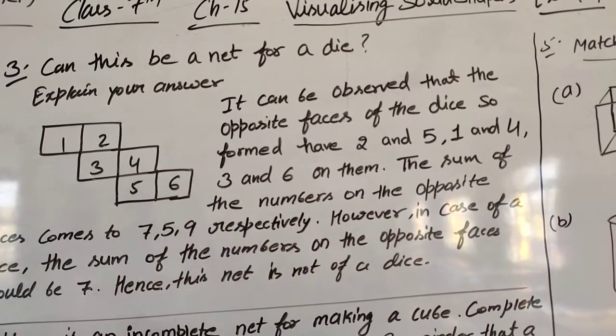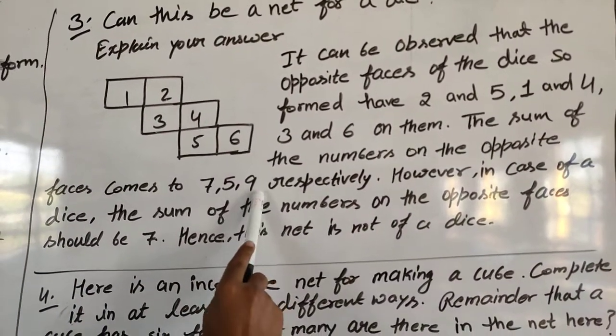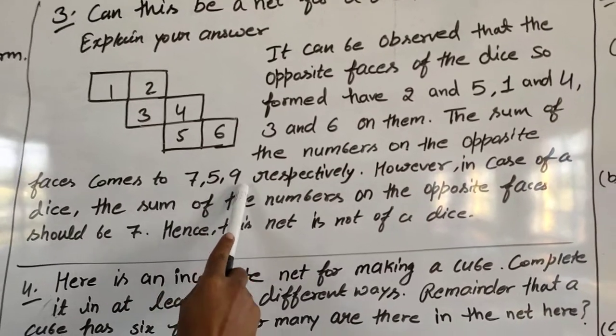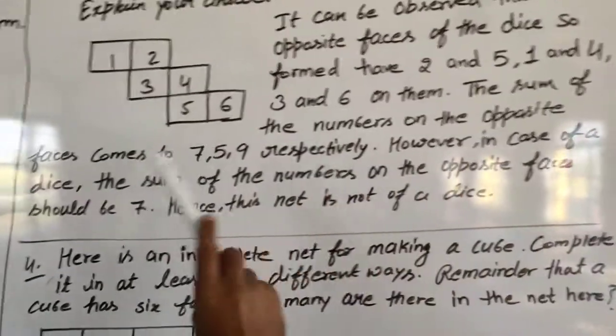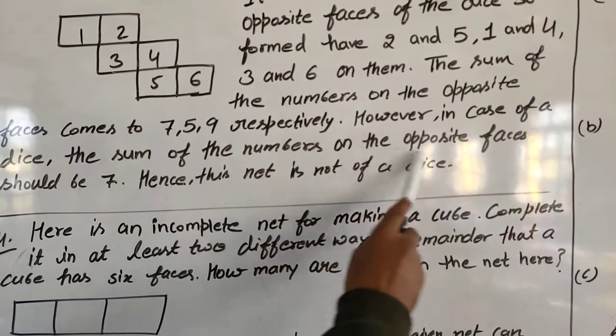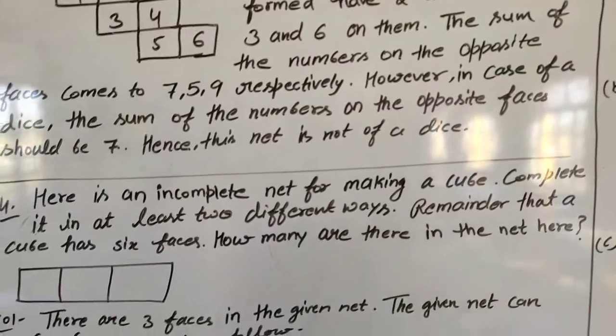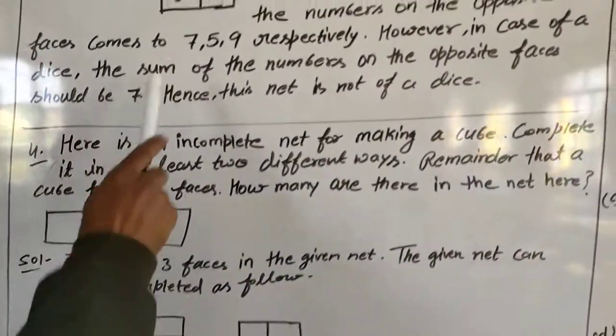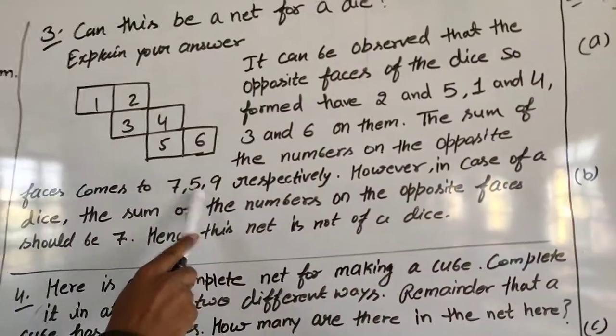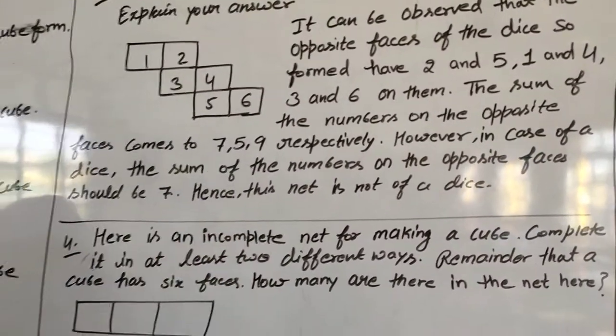The sum of the numbers of the opposite faces comes to 7, 5, and 9. Here is 7, here is 5, here is 9. However, in case of a dice, the sum of the numbers on the opposite faces should be 7. Hence, this is not a net of a dice. We know that all sums of opposite faces must be 7, but here we have 5 and 9, so it is not a cube form.